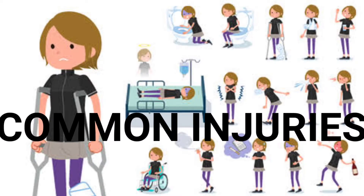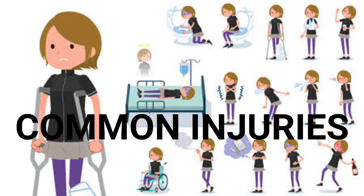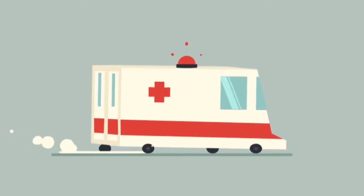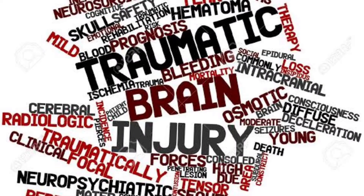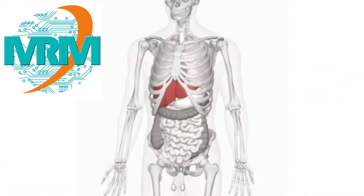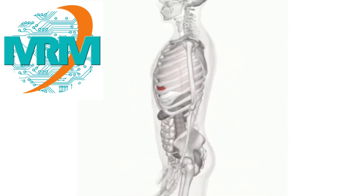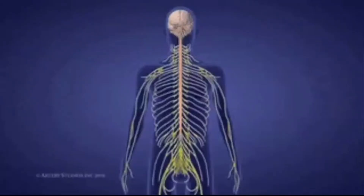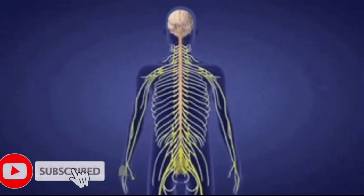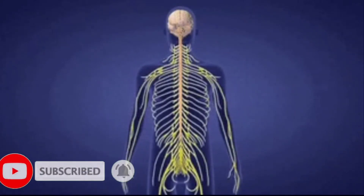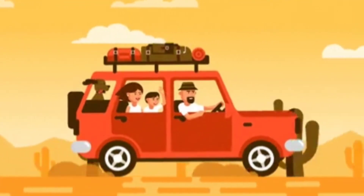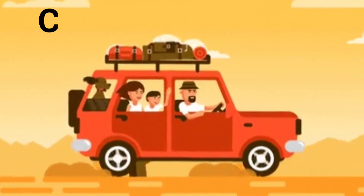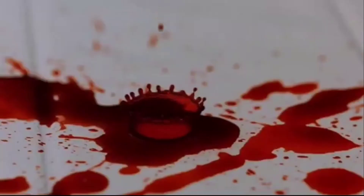Common injuries that cause death in car accidents include traumatic brain injuries, internal injuries or bleeding, broken ribs, or spinal cord injuries. These types of injuries often occur as a result of head-on collisions, driver or passenger side impacts, or roll-overs. Car accidents are among the most common causes of death.